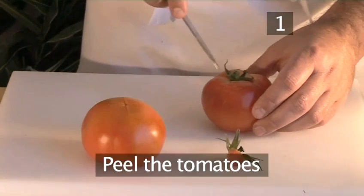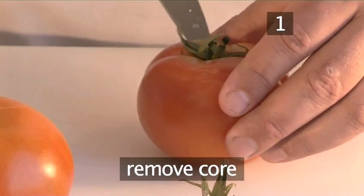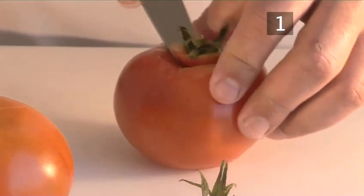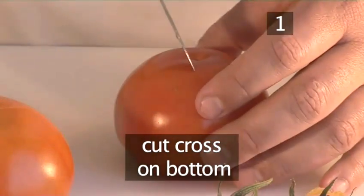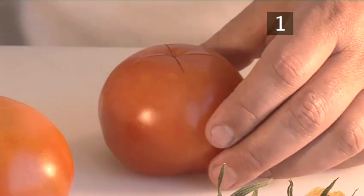The tomatoes we use in the sauce need to be peeled and deseeded. First, remove the core of the tomato with a sharp knife, like this. Then turn over the tomato and make a small cross on the bottom. Repeat the same process with the other tomato.